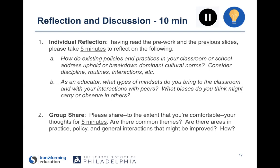The two prompts for individual reflection: How do existing policies and practices in your school or classroom address, uphold, or break down dominant cultural norms? Think about discipline policies, routines, interactions between students and adults, or adults and adults. And as an educator, what types of mindsets do you bring to the classroom and to interactions with peers? What biases do you think you might carry or observe in others? You can reflect on any aspect of the reading that felt relevant. I'll ask the facilitator to pause this slide and after ten minutes, press play again.